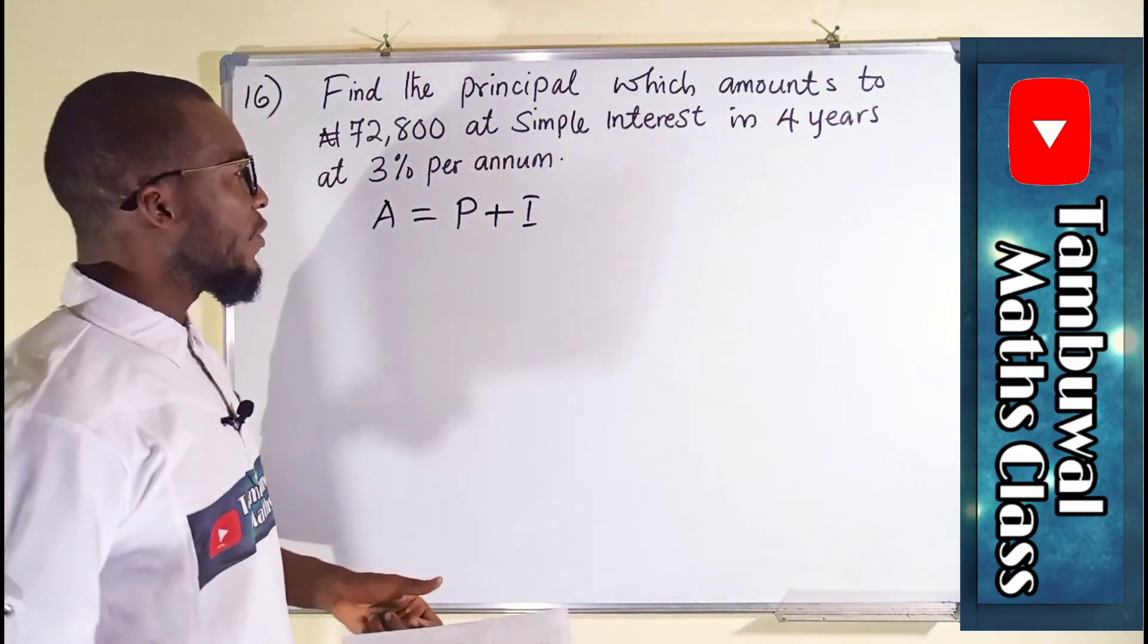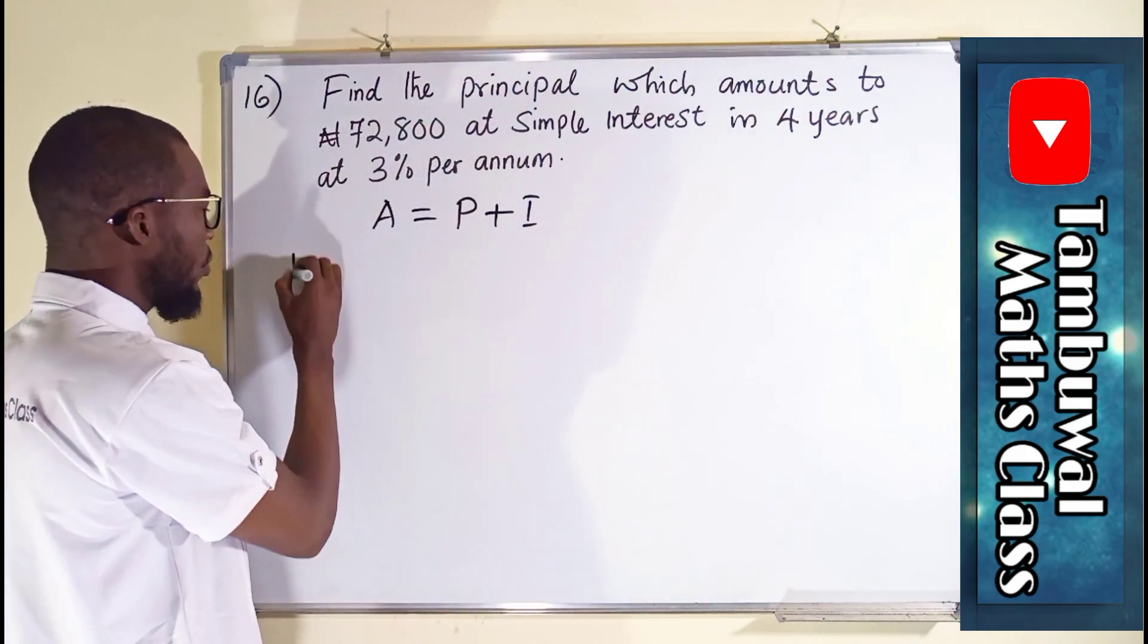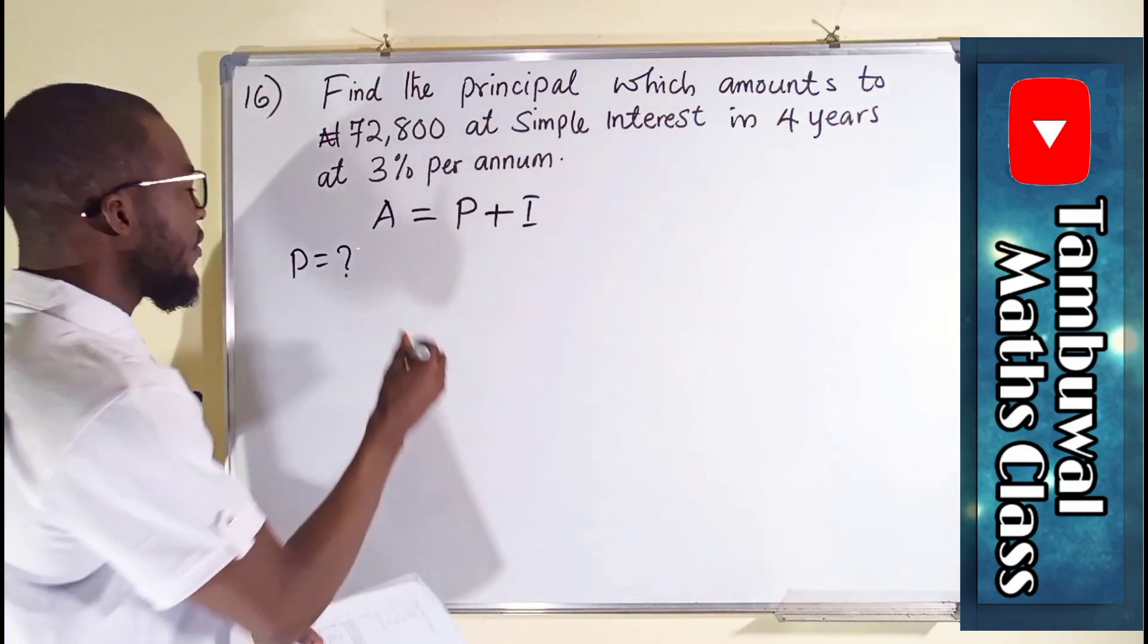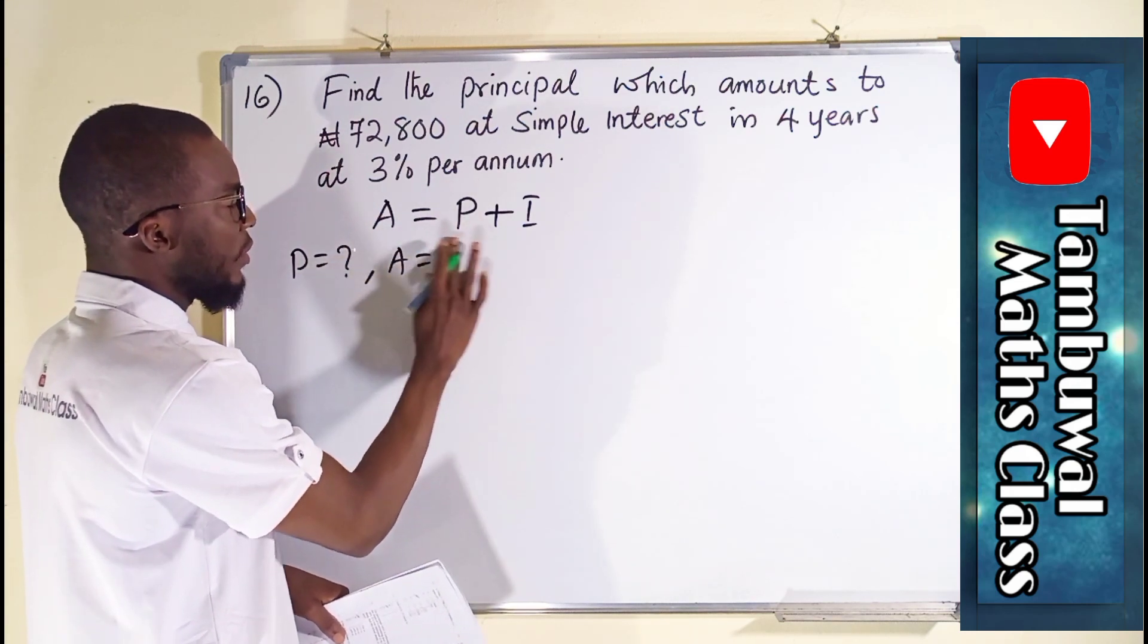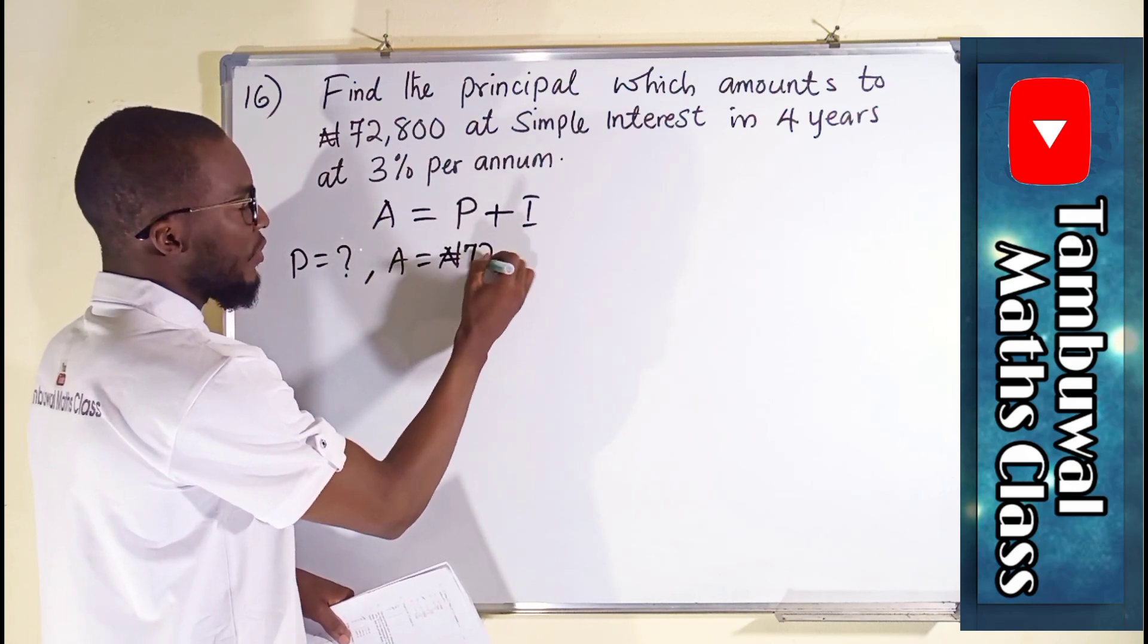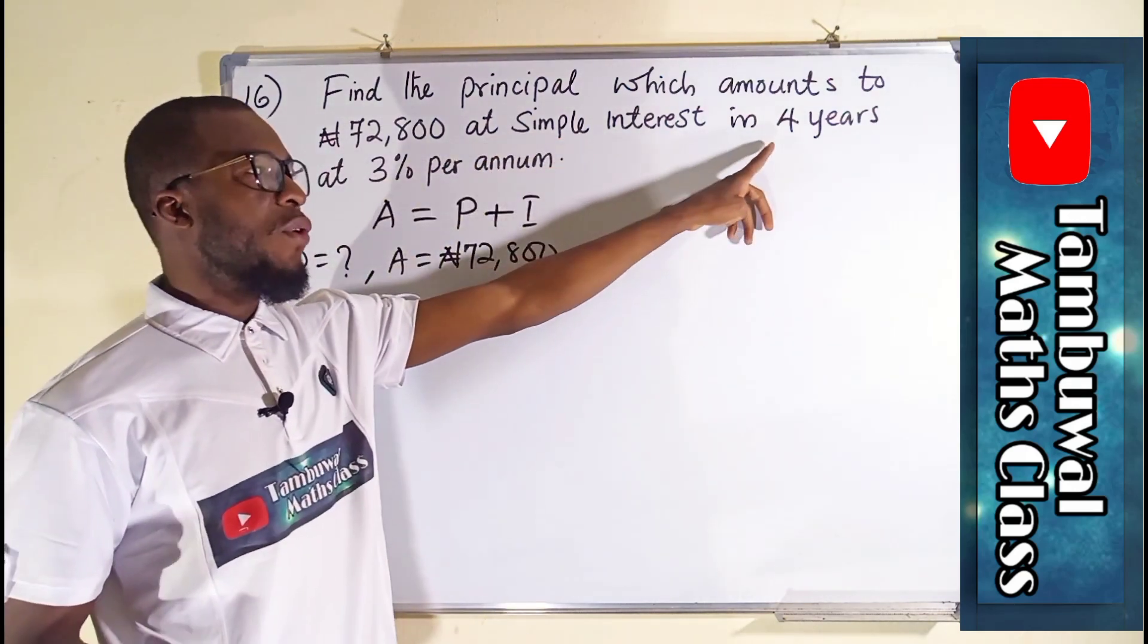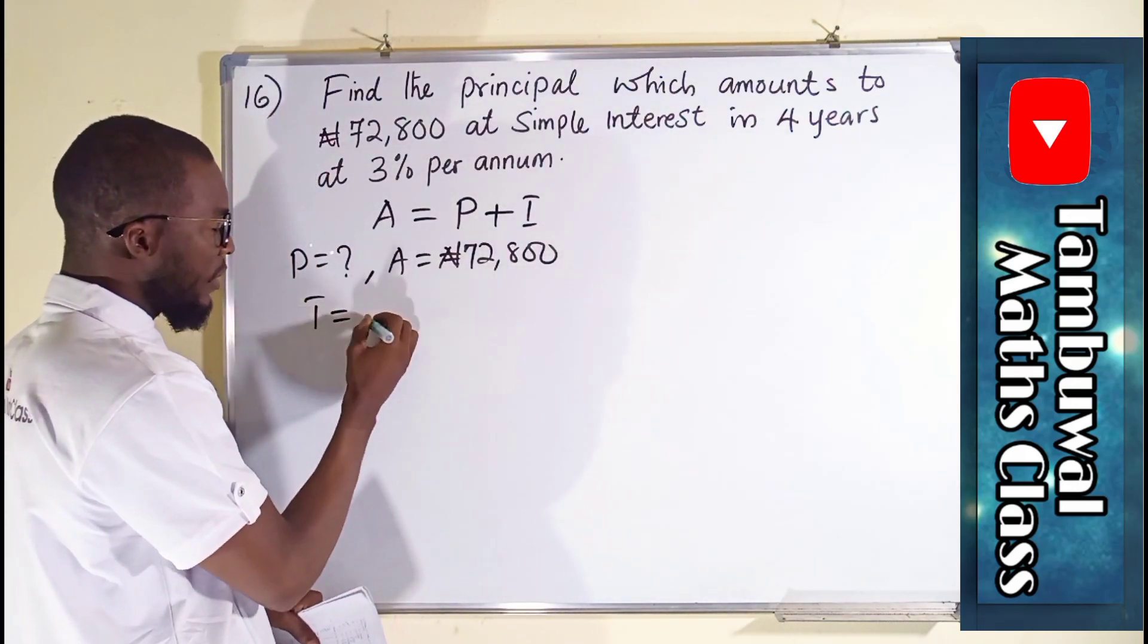Now let us collect our data from this information. We are looking for the principal, so our principal is unknown. Which amounts to the amount is given as 72,800 Naira at simple interest in four years. So we are given the time in years which is 4.